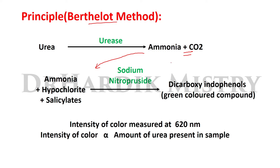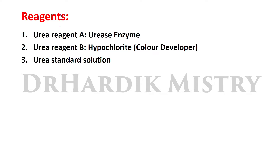This ammonia reacts with hypochlorite and salicylates in the presence of sodium nitroprusside to give dicarboxy indophenol, a green color compound. The intensity of this green color compound is measured at 620 nanometer wavelength colorimetrically. The intensity of color is directly proportional to the amount of urea present in the sample.